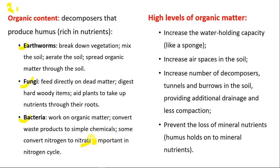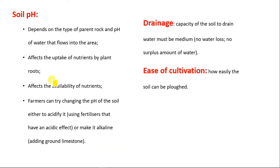Higher levels of organic matter are important because: first, it increases the water holding capacity — acting like a sponge, absorbing more water. Second, it increases air spaces in the soil, providing more oxygen, and it increases the number of decomposers and tunnels in the soil, providing additional drainage and less compaction. Third, it prevents loss of mineral nutrients, as humus holds onto mineral nutrients.